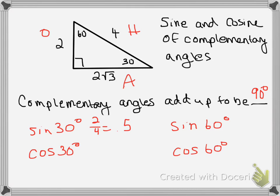Cosine of 30° is adjacent over hypotenuse, which is 2√3 over 4. The calculator gives the decimal equivalent of that as 0.87.